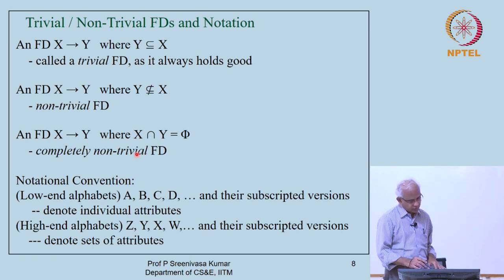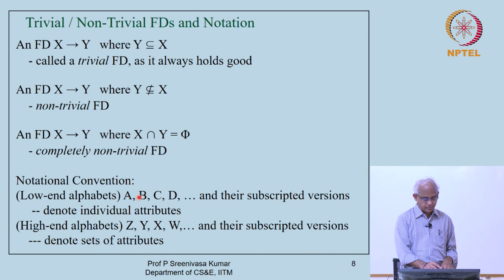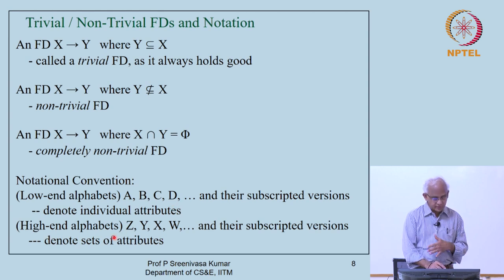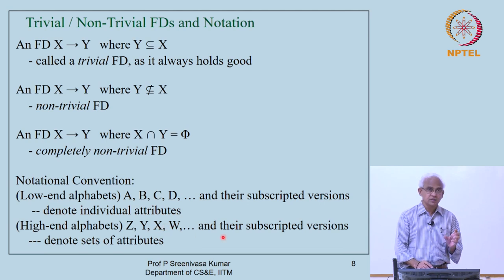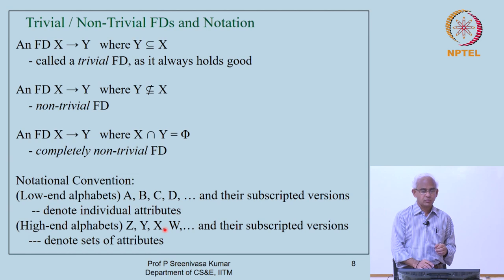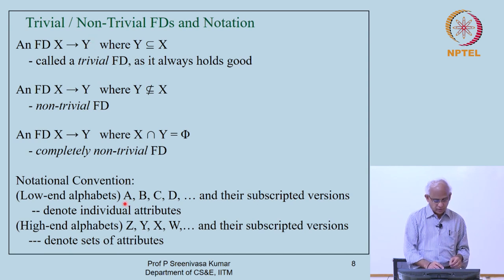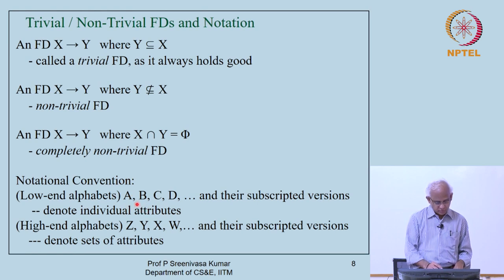Before we proceed, here is a notational convention. We will use lowercase alphabets A, B, C, D along with subscripted versions like A1, B1, C1 to denote individual attributes. The high-end alphabets X, Y, Z, W, U, V we will use for sets of attributes. That is why in functional dependencies we have always been writing X determines Y — X is a set of attributes, Y is a set of attributes. For individual attributes we use letters from the lower end of the alphabet.